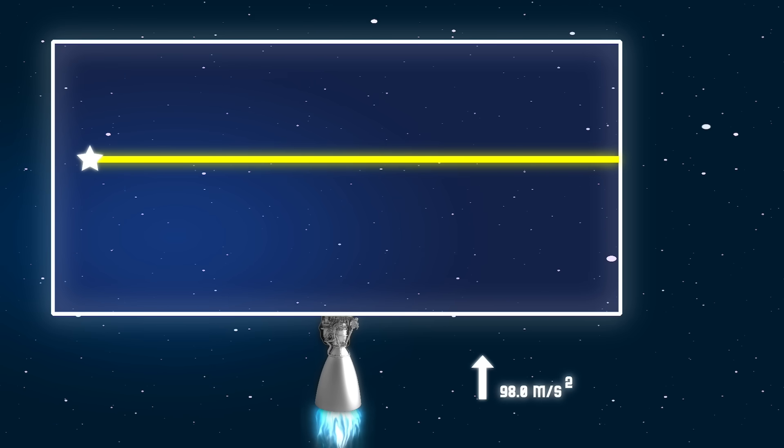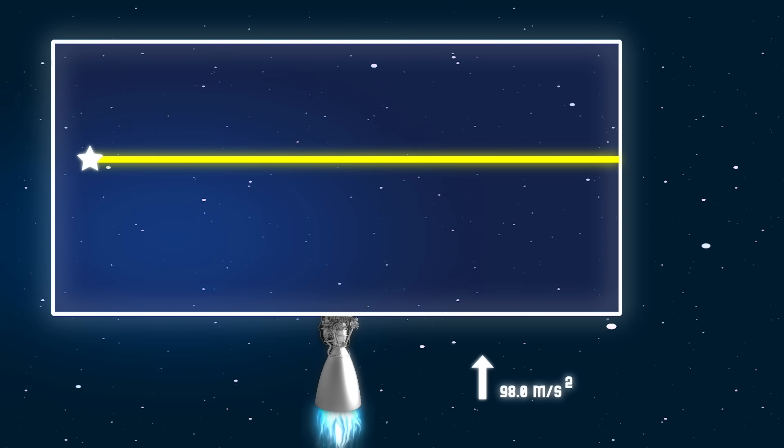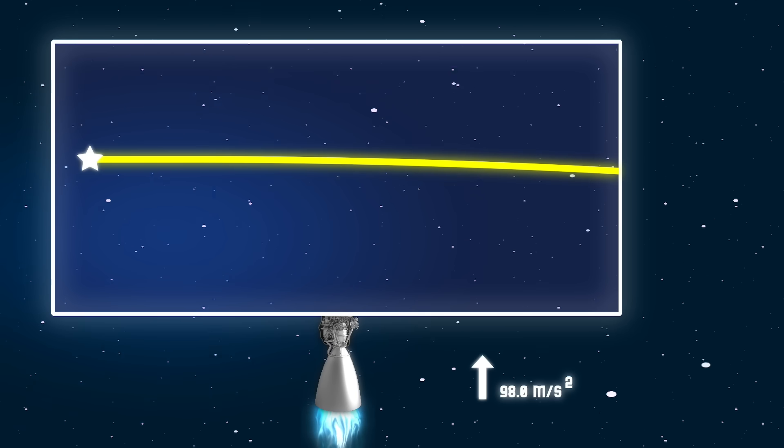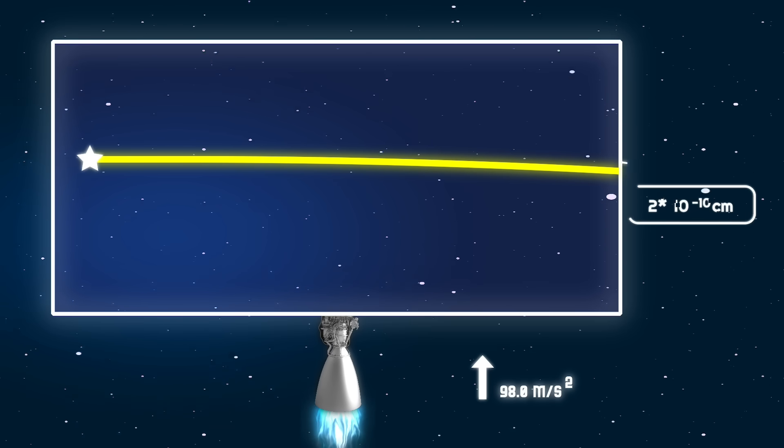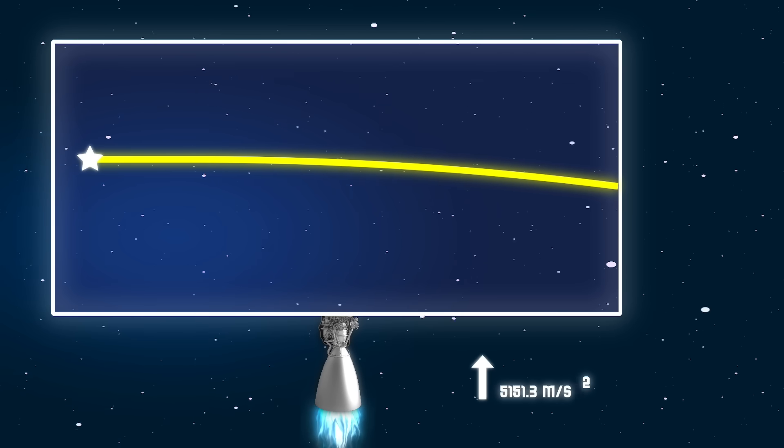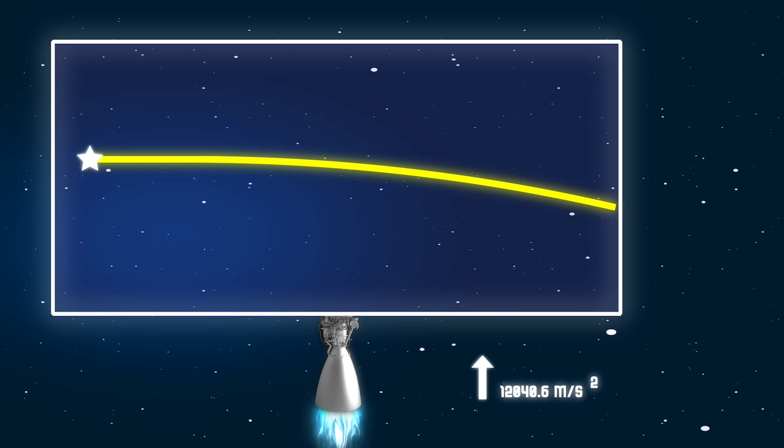According to Einstein's prediction, the bend of light in acceleration at 98 meters per second square is very small. That is, it bends only the size of an electron. This means that if we increase gravity or acceleration, light can bend more and more.